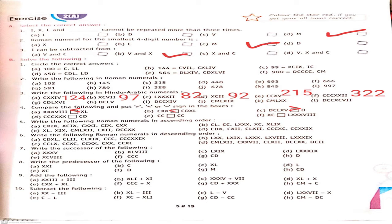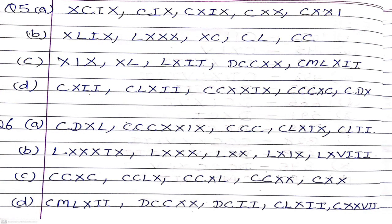Question 5: write the following Roman numerals in ascending order. For each question two options are given; circle the correct one. 100 is represented as C, so circle C. For 144, written as CXLIV — C means 100, XL means 40, IV means 4 — circle the second option. Similarly, solve the other parts.